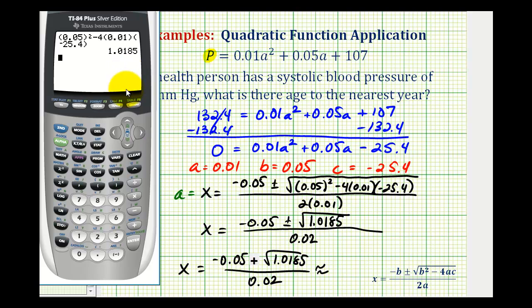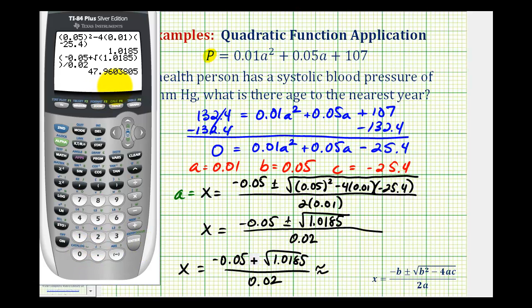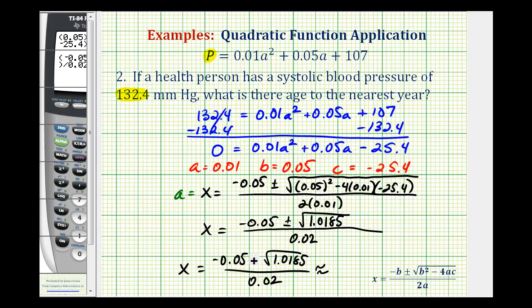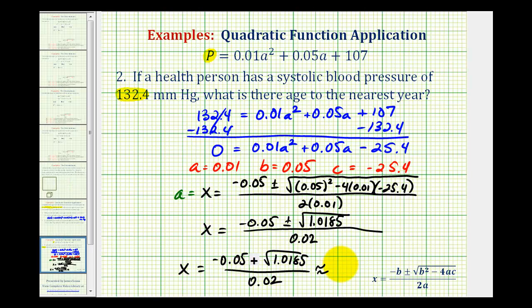So to do this, we'll have a set of parentheses for the numerator. We'll have an open parentheses, negative 0.05 plus the square root of 1.0185. Notice we have one closed parentheses for the square root and the second one for the numerator. And then we're going to divide this by 0.02. So we have approximately 47.96 years, which would round to 48 years of age. I hope you found this helpful.